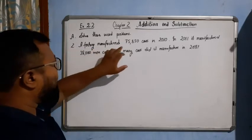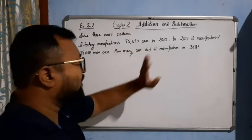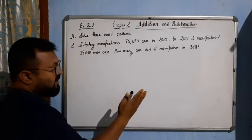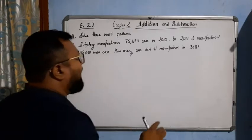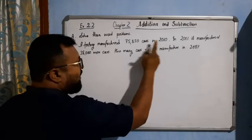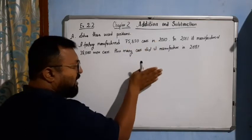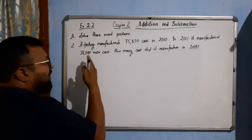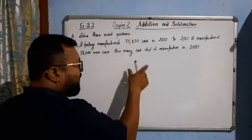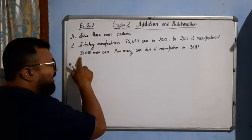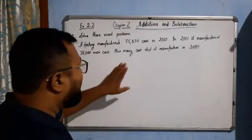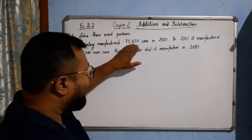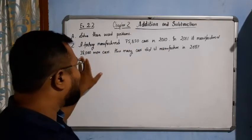A factory manufactured 75,850 cars in 2010. In 2011 it manufactured 38,000 more cars. It means you have to understand that in 2010 company manufactured 75,850 cars. In 2011 they manufactured extra, you can say apart from 75,850 they manufactured 38,000 more cars. In 2011 they already made this much and they manufactured extra 38,000 more cars.